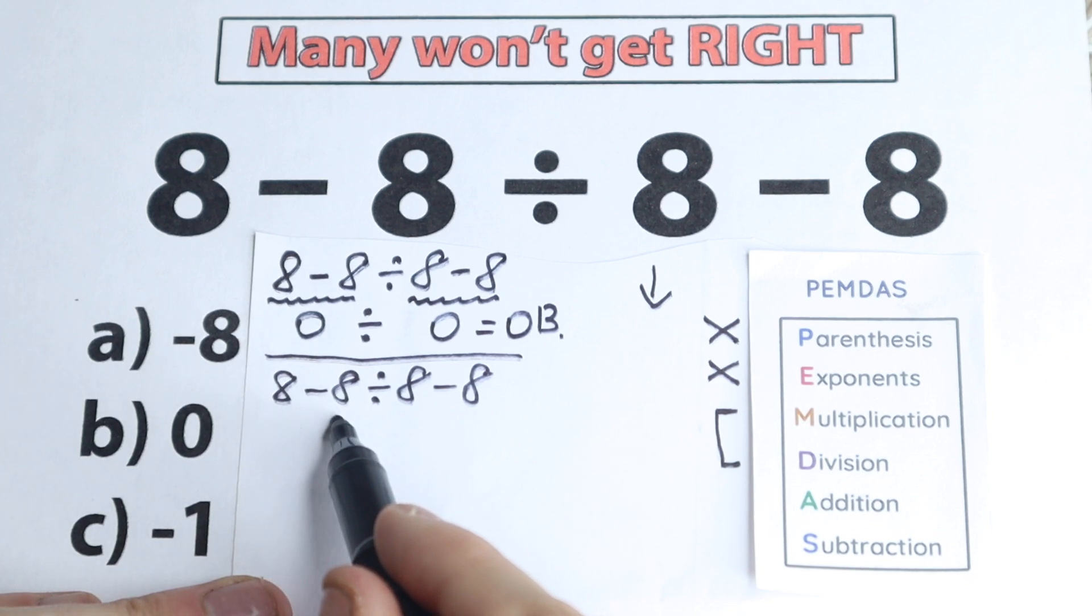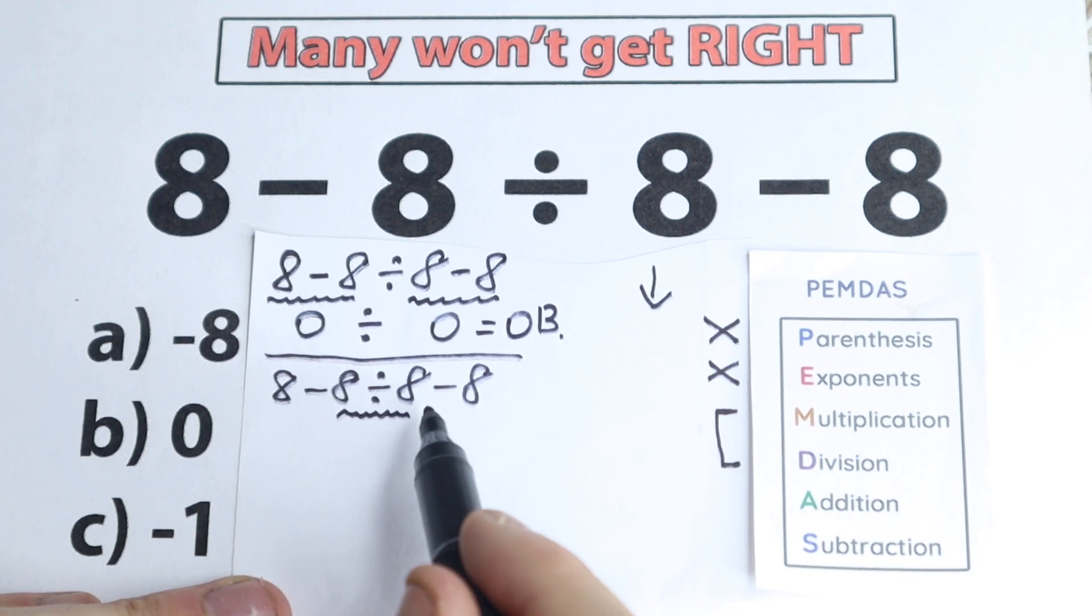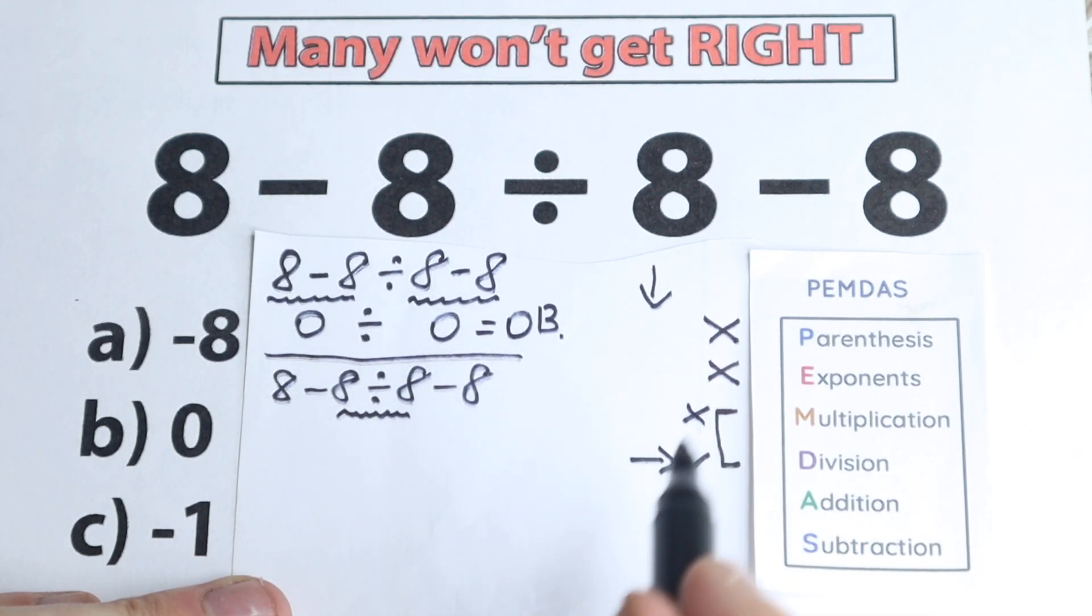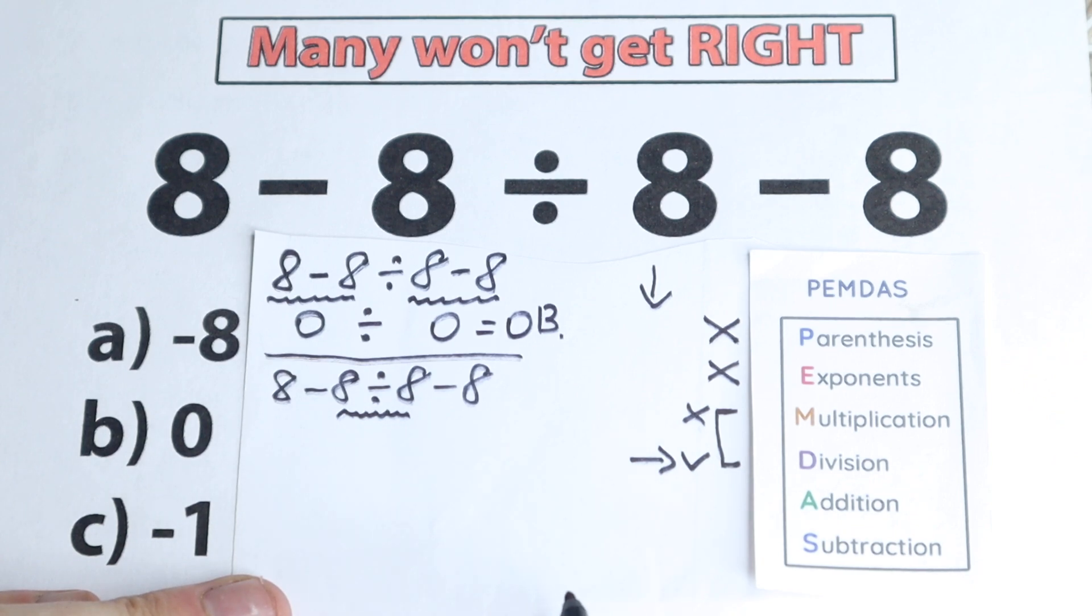So right here, subtraction, we don't need it, yeah, right here we have division, so we need this sign and subtraction. So our first step is to solve this division part, so we don't have multiplication, we have division part right here.